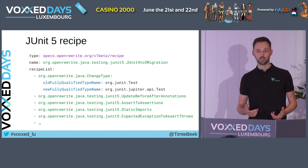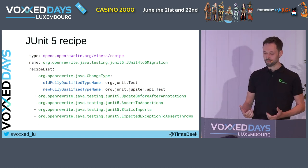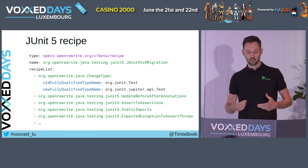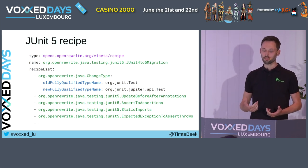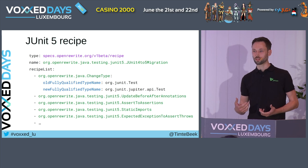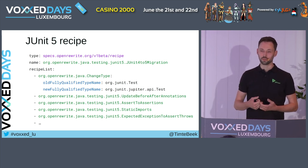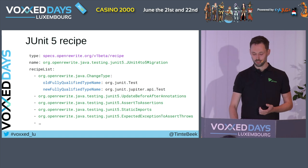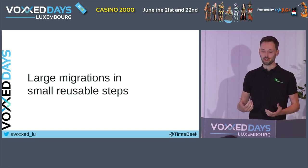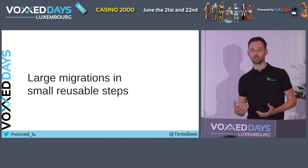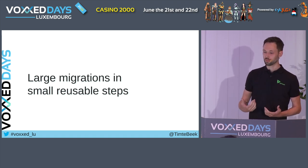Notice how each step is reflected as a separate recipe in this YAML configuration file. Some refer to and configure generic steps, such as the change type recipe. Others are implemented as an imperative step — a dedicated Java visitor that changes the abstract syntax tree. All these steps combine to achieve a complete JUnit 5 migration. And this is a common pattern with Open Rewrite: large migrations are broken up into small reusable steps.